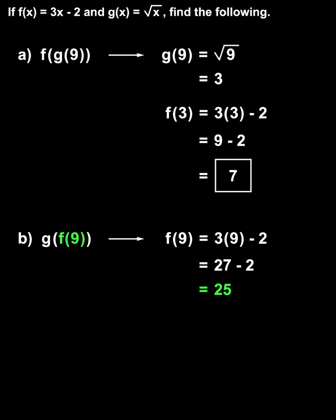Since f of 9 equals 25, g of f of 9 is the same thing as g of 25. So our next step is to find g of 25. Remember that g of x equals root x, so to find g of 25, we substitute a 25 in for the x in the function, to get g of 25 equals root 25. The square root of 25 is 5, so g of 25 equals 5. Therefore, g of f of 9 equals 5.